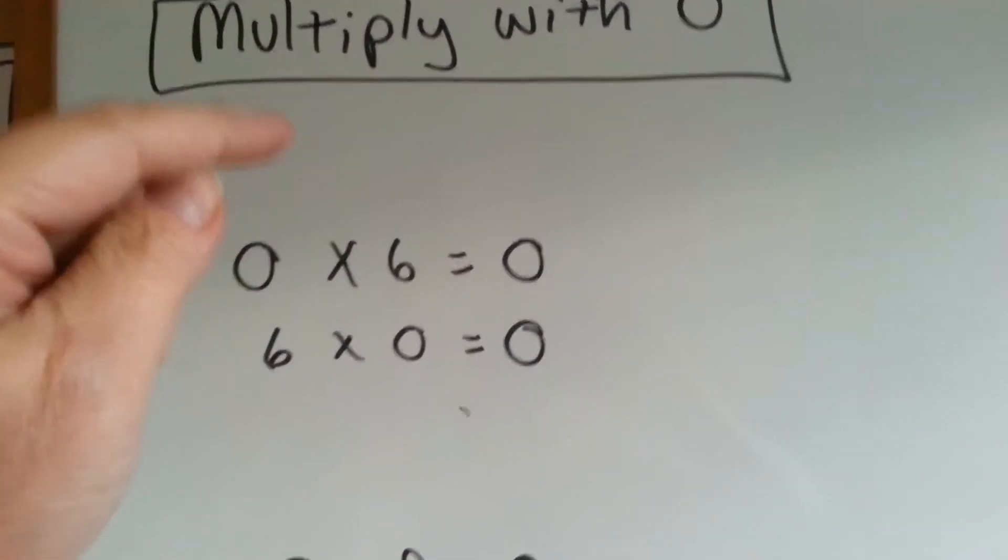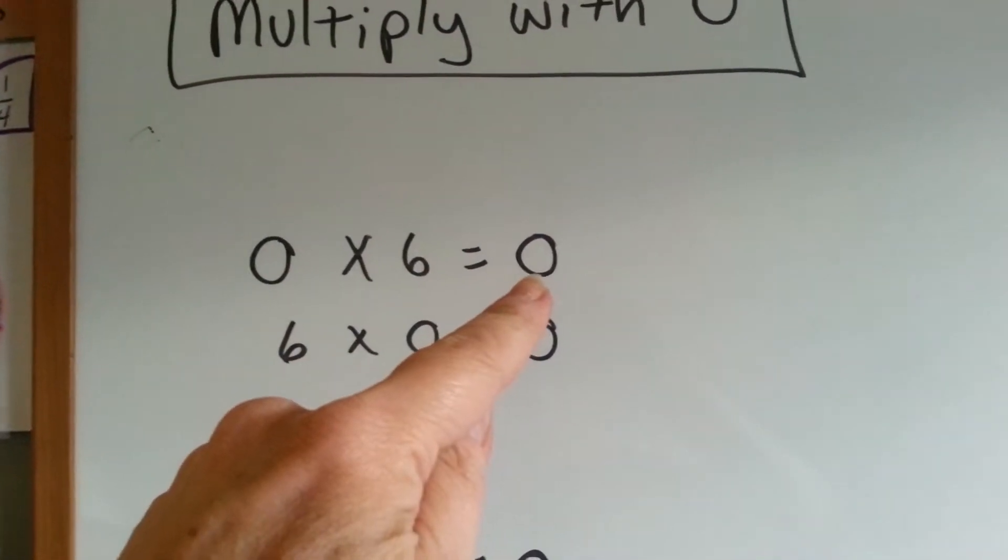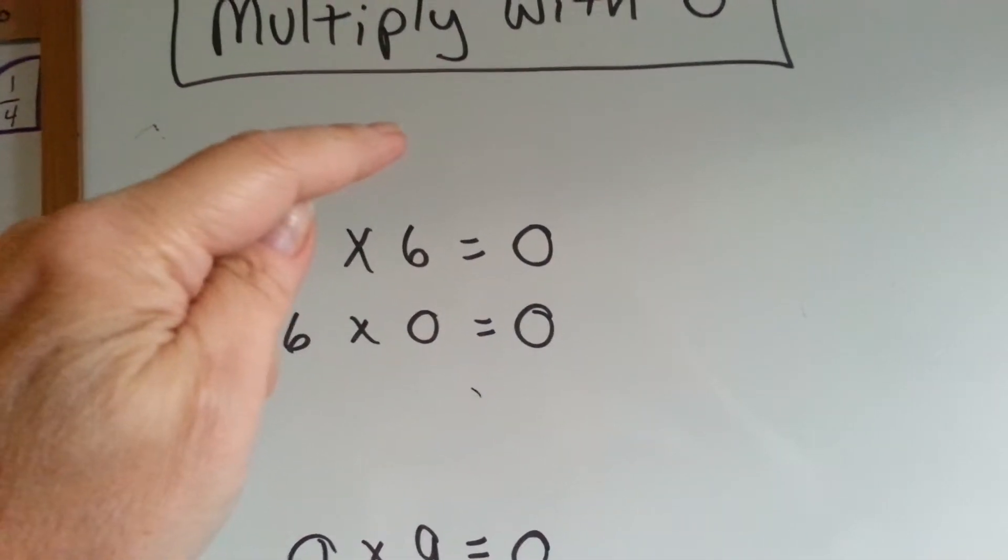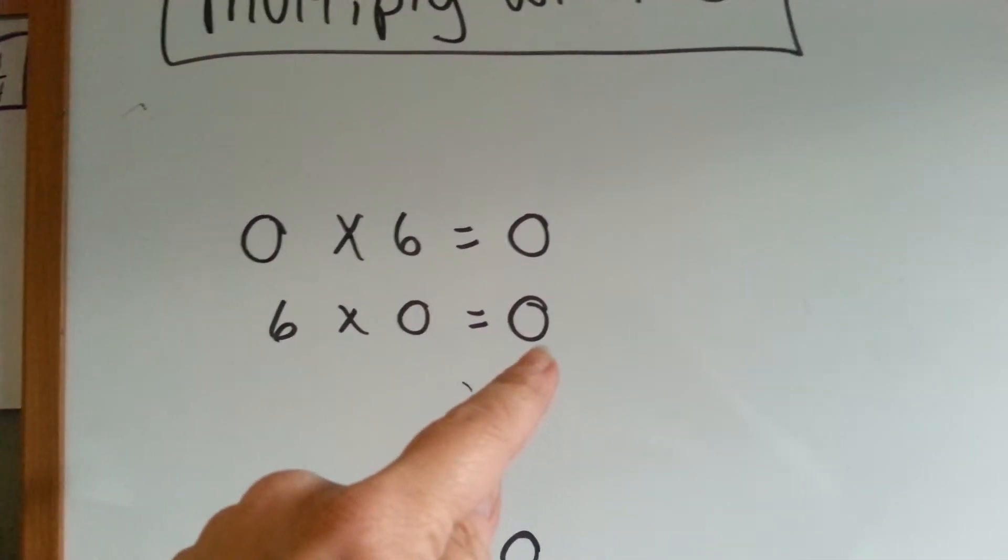If I have no 6's, then I have nothing, none. If I have 6 0's, I still don't have anything.